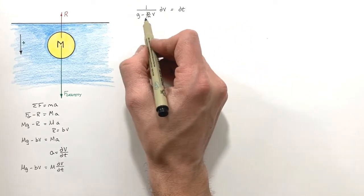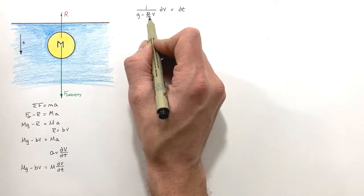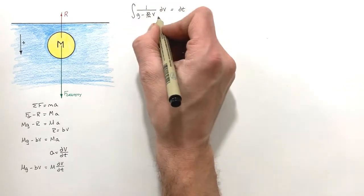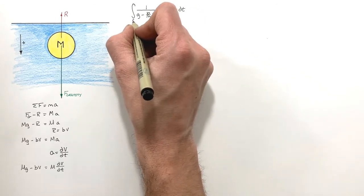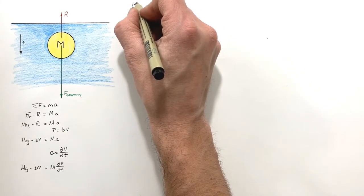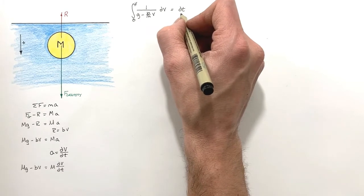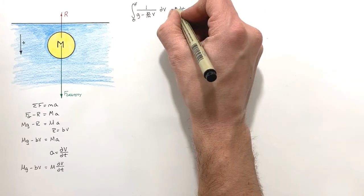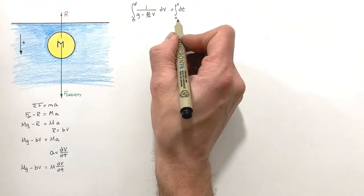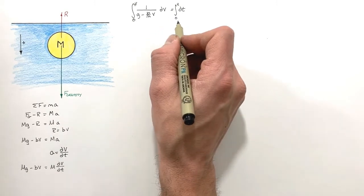We now have an equation where we've related the change in velocity to the change in time. We're going to integrate: looking at the sum of all changes in velocity from the initial velocity — the ball was released from rest — to some velocity V at any point in time, over a change in time from zero to T. We'll evaluate each of these integrals independently to come up with an equation for V as a function of time.